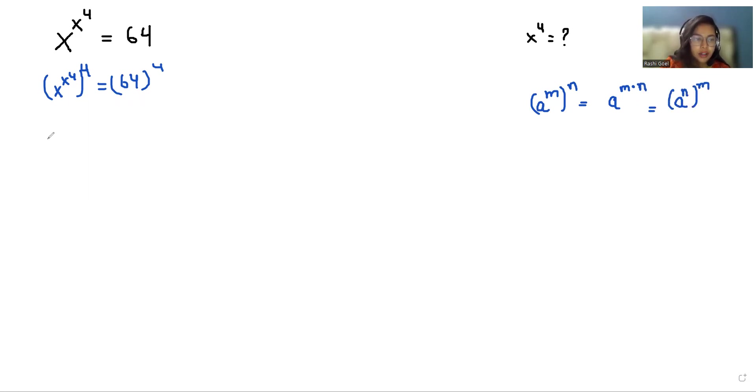So I can write it as x to the power of x to the power 4 times 4 equals 64 to the power 4.